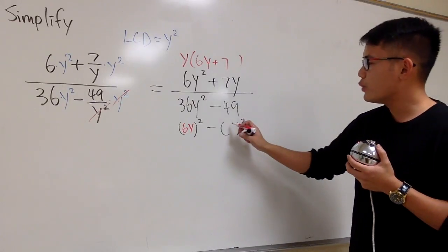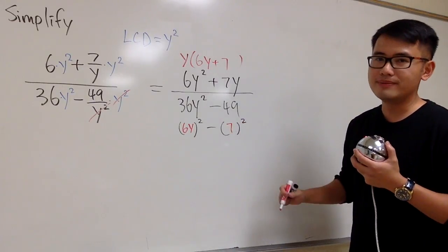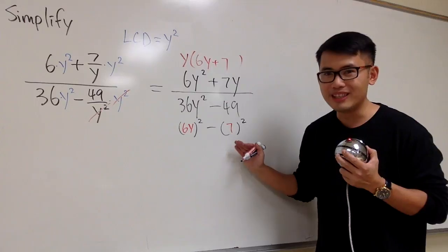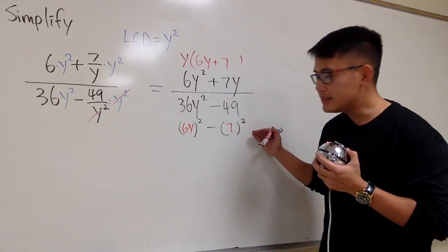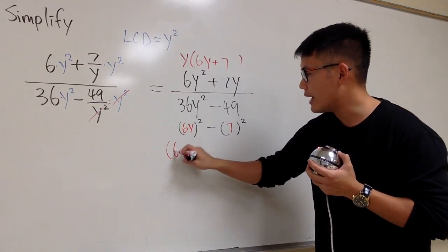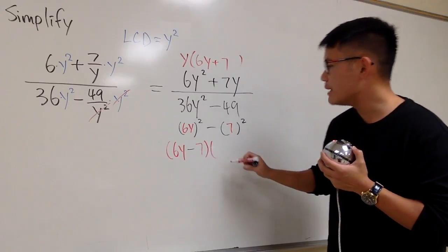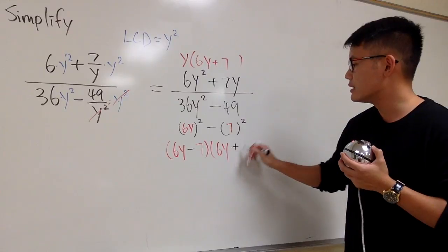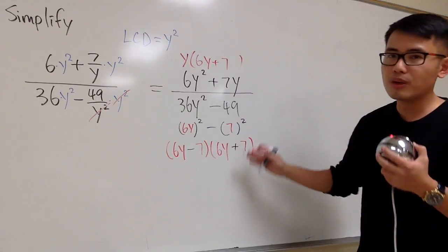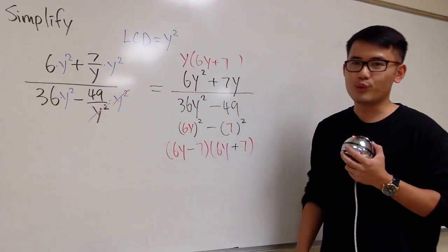This is how we are going to get ready. And then to factor this out, we will get 6y minus 7, and then times 6y plus 7. The formula for the difference of two squares.